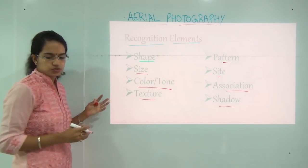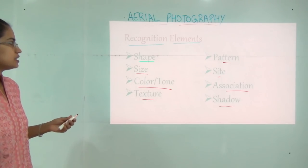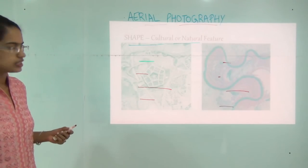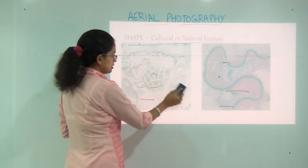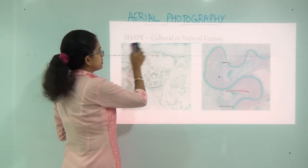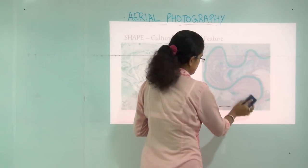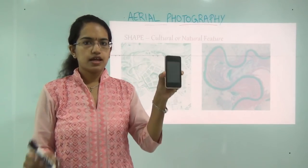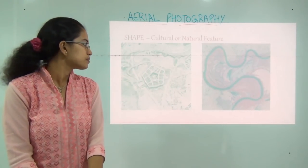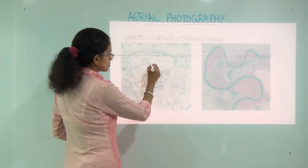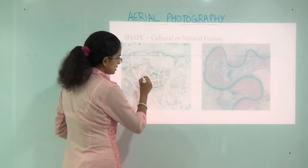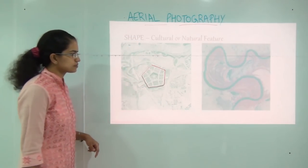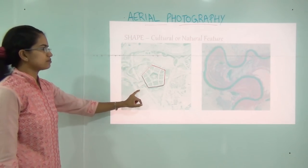The first recognition element is shape. As I gave an example, we can distinguish two shapes — one is a rectangular shape and the other is cylindrical. Here in the picture, I can see a kind of pentagon shape. So this shape which is pentagon can be identified.